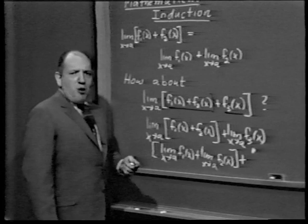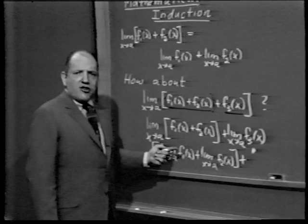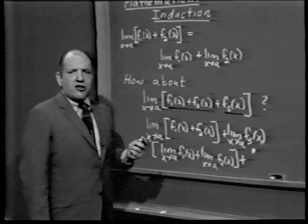More importantly, the truth for three hinged directly on the truth for two. It wasn't just that we proved the formula was true for the sum of three functions — we proved it on the assumption that it was already true for the sum of two functions. And notice how we may now begin to suspect that this idea generalizes.